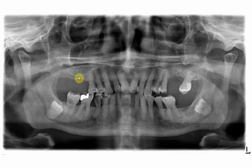What we are concerned about is the continuity of the floor of the maxillary sinus. If we see the floor to be continuous with no interruption, it means there is no communication between the oral cavity and the maxillary sinus.